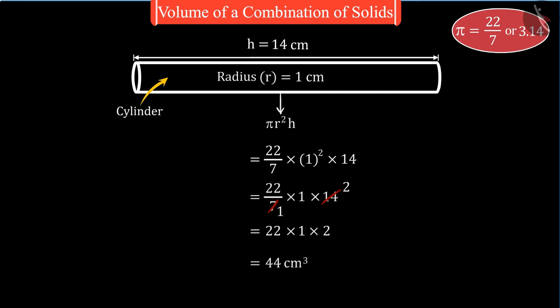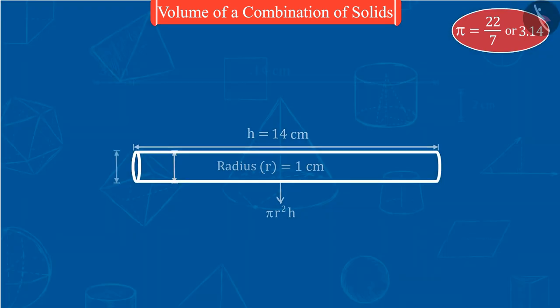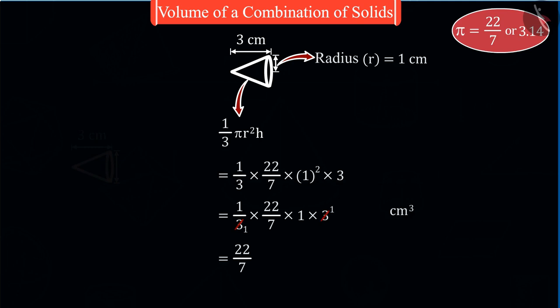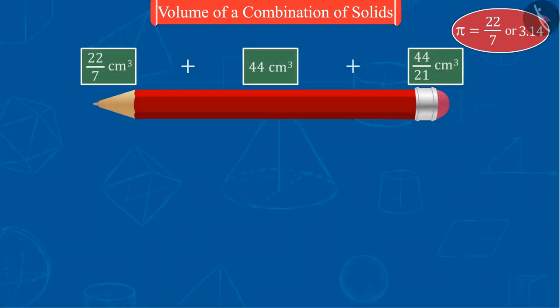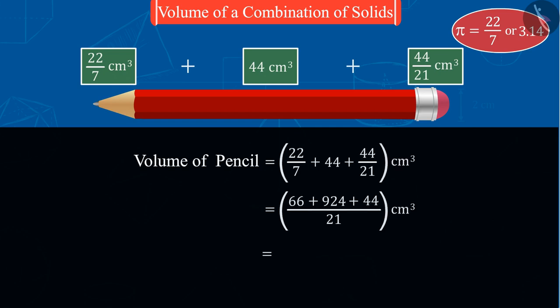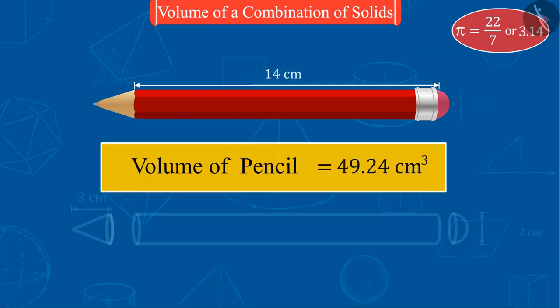Similarly, on solving for cone we get 22 upon 7 cubic centimeters. Now on adding the volumes of these figures, we can find out the volume of the pencil which is 49.24 cubic centimeters.